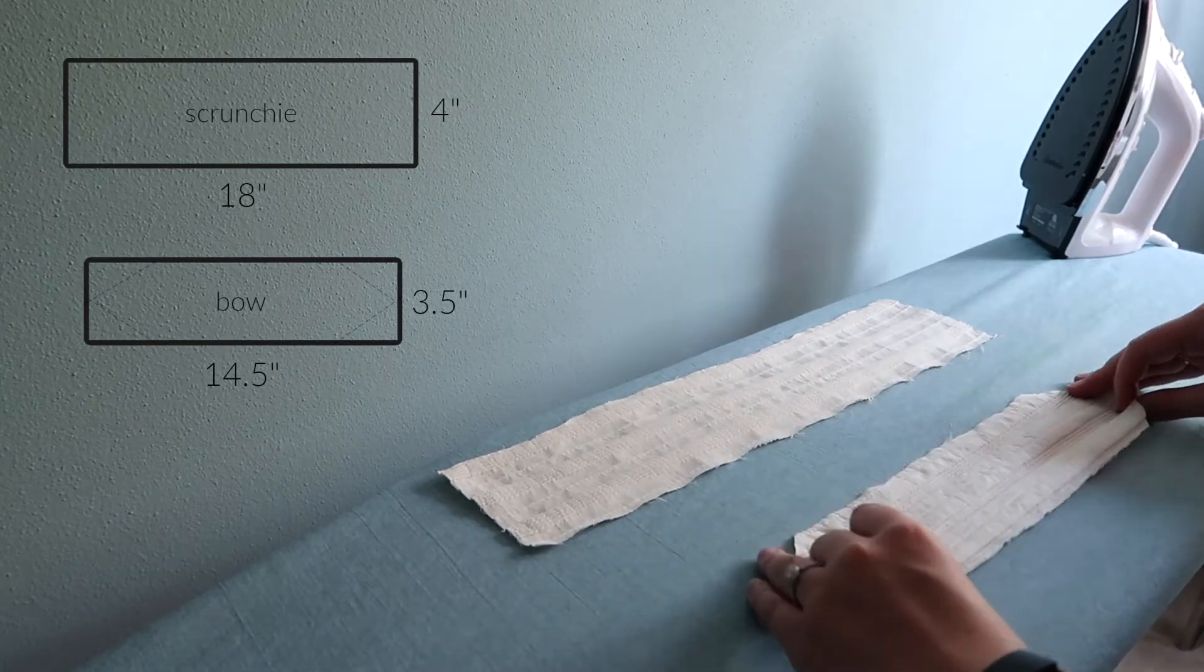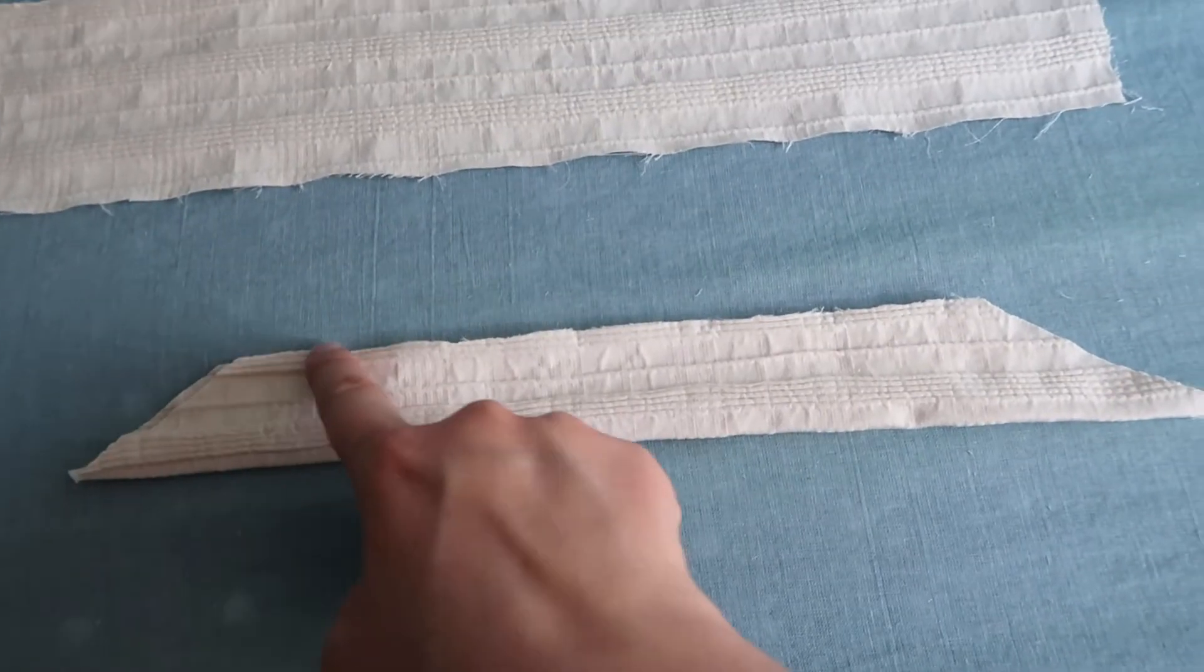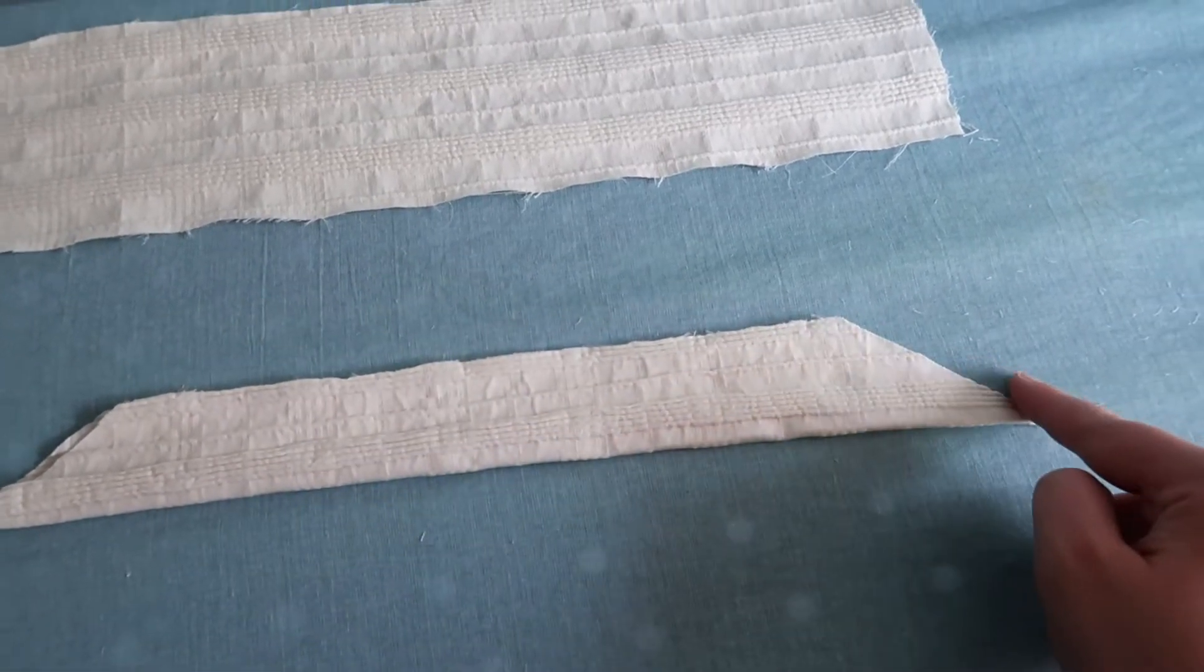Take your bow piece and fold it in half right sides together and then sew along the edge, leaving a gap in the middle for you to be able to turn it right side out.